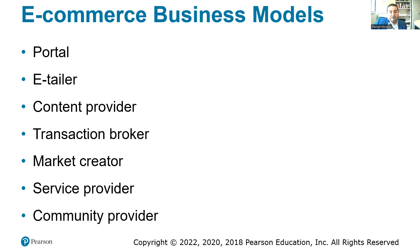The service provider model is a firm that provides applications as a service — examples include Google's G Suite and Dropbox, which provides storage as a service. The community provider model provides a place where people can meet with each other — examples include social media websites like Facebook, Twitter, and LinkedIn.